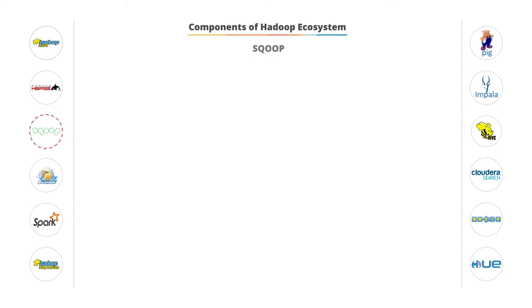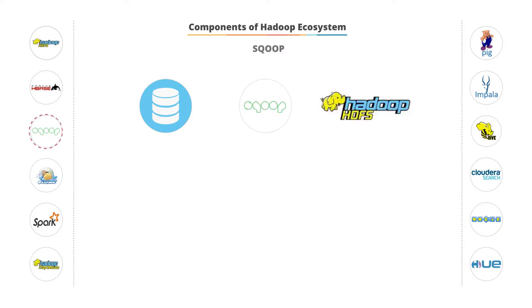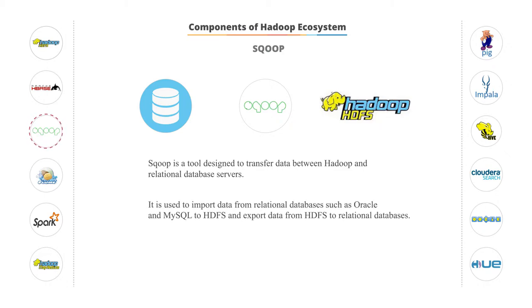While we looked at how data is distributed and stored, now let's understand how this data is ingested or transferred to HDFS. One tool that utilizes this function is called Sqoop. Sqoop is a tool designed to transfer data between Hadoop and relational database servers. It is used to import data from relational databases, such as Oracle and MySQL, to HDFS, and then export data from HDFS back to the relational databases.